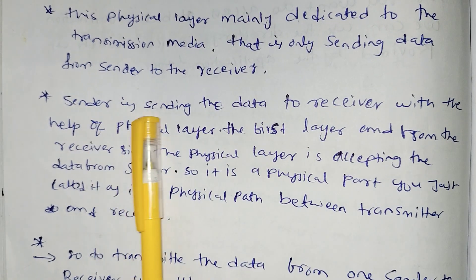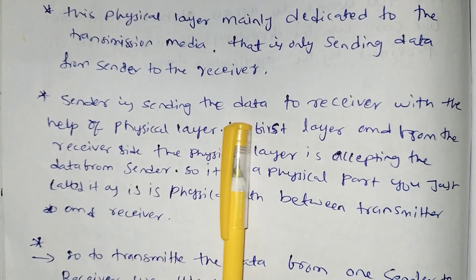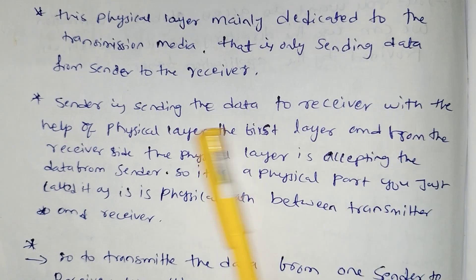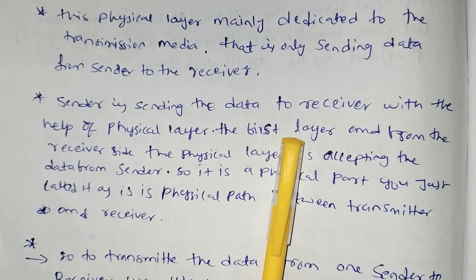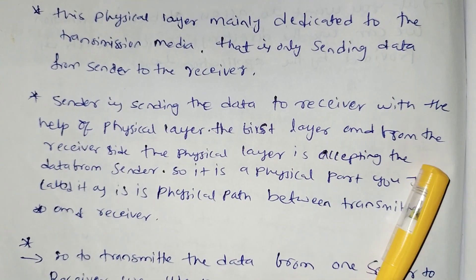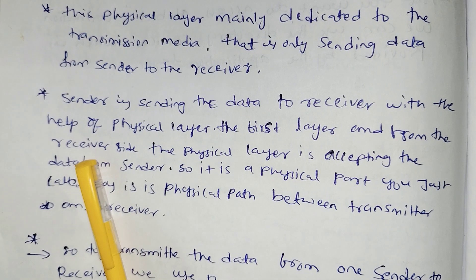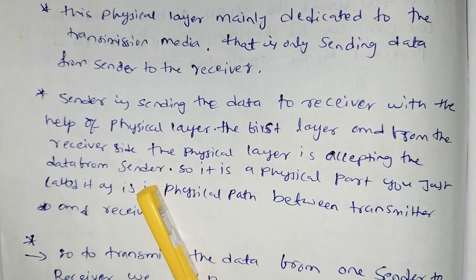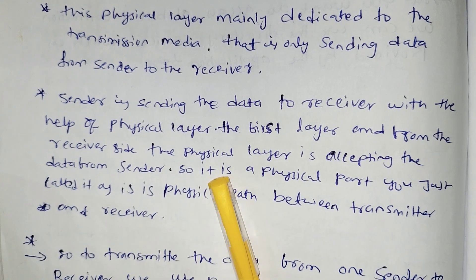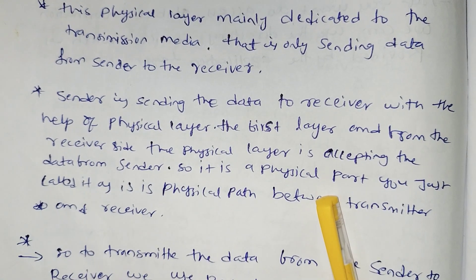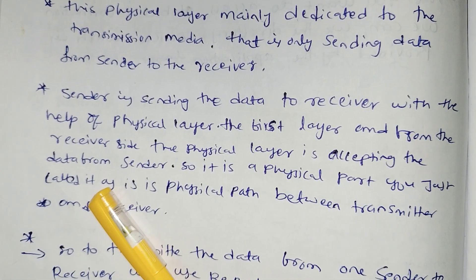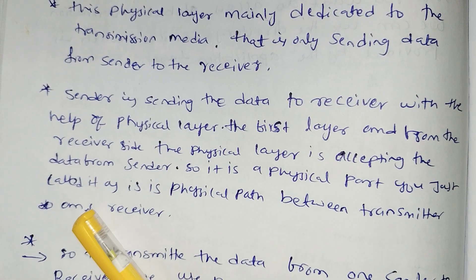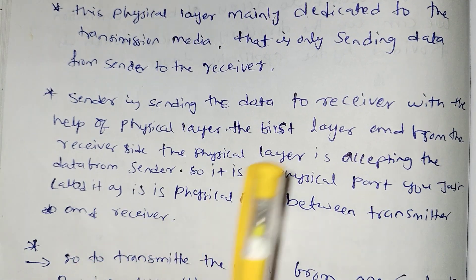The sender sends data to the receiver with the help of the physical layer — the first layer. From the receiver side, the physical layer accepts the data from the sender. So it is a physical path, just called the physical path, between transmitter and receiver.